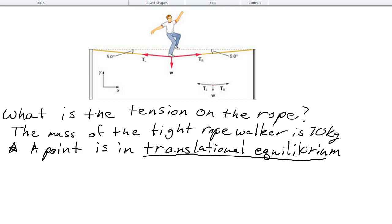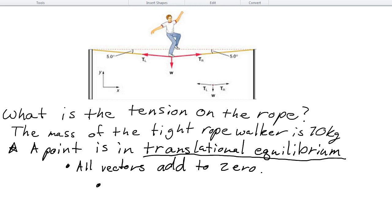So what are the consequences of being in translational equilibrium? If you remember from class, it means that all the vectors acting on this one point that we're considering as the tightrope walker add to zero. And additionally, because all the vectors add to zero, all the vector components also add to zero.